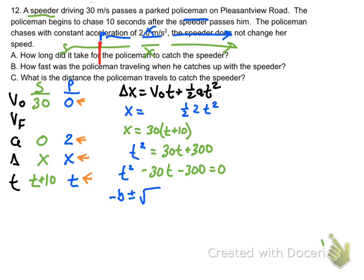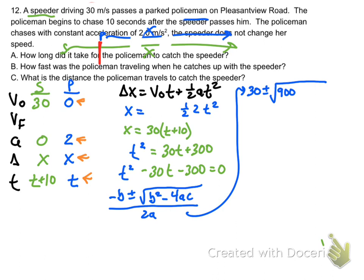Now we have to do the quadratic expression to find out what t is. So we go through, we do our algebra: b squared is 900, 4ac is 1200, all over 2a, which is 2.